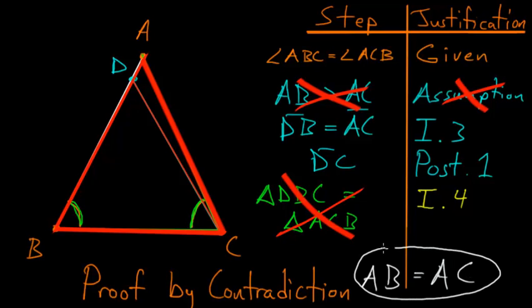And if one can't be bigger than the other one, then that means that AB and AC have to be equal to each other. This is exactly what we sought out to prove, so we can end our proof with QED.